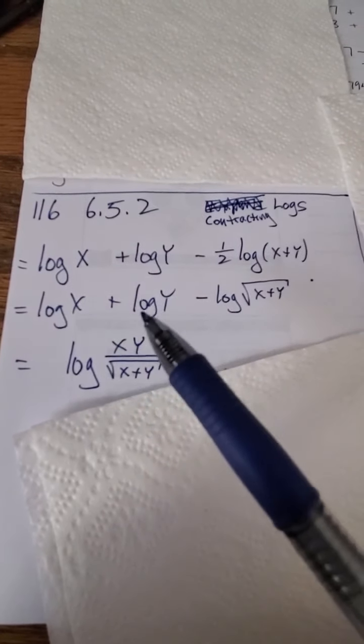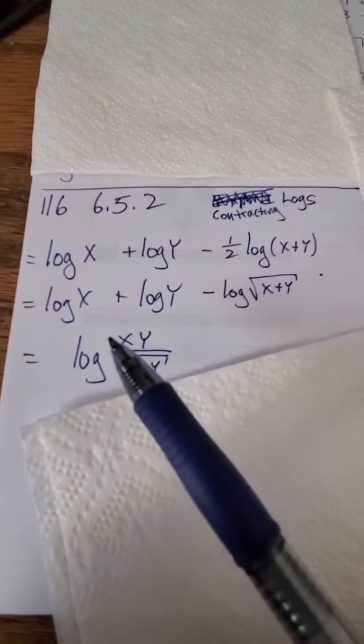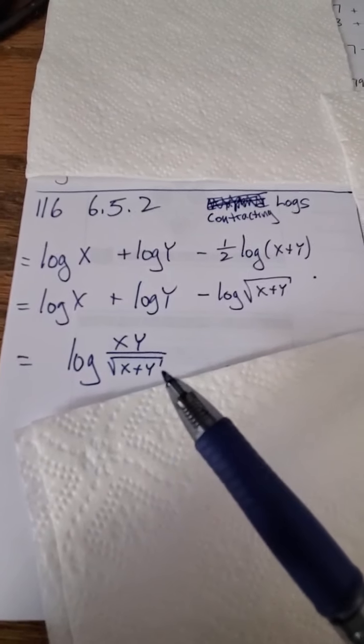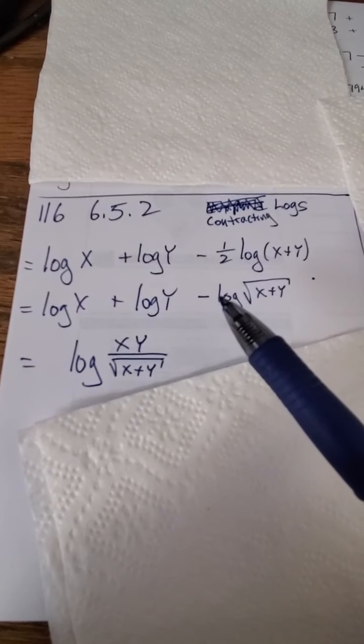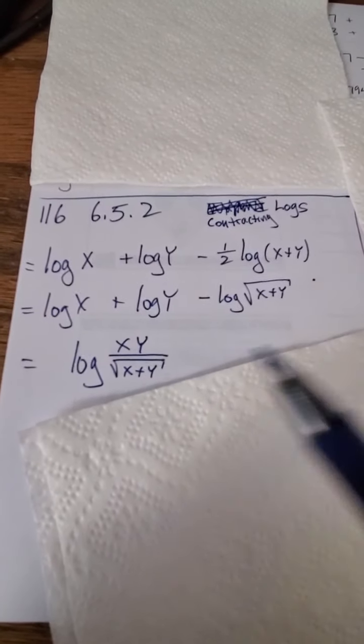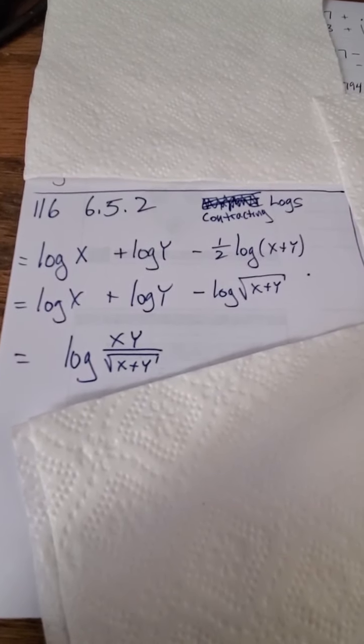So log x plus log y minus log of square root of x plus y, that becomes log of xy divided by the square root of x plus y, because when I add these two logs, I'm multiplying them. When I subtract this log, I'm dividing it, and this is the log rules backwards, and this is an example of contracting logarithms.